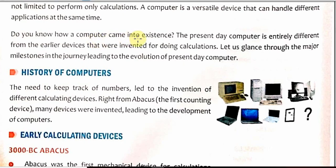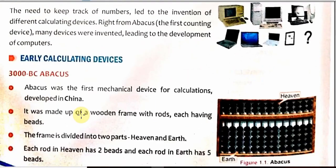Now how did a computer come into existence? The computer we see today is not the computer it was in early days. So let us check the history of computers. The need to keep track of numbers led to the invention of different types of calculating devices, starting from the Chinese abacus to modern computers. So let us check them one by one.